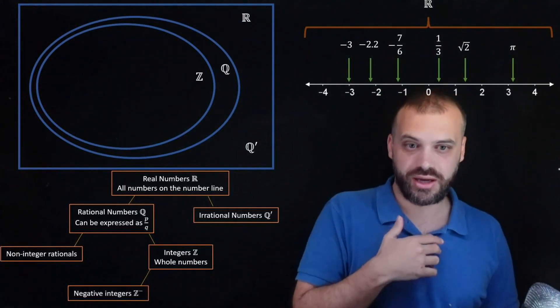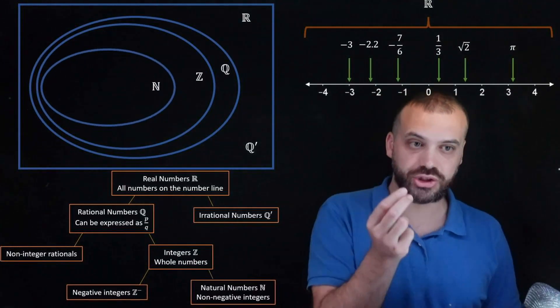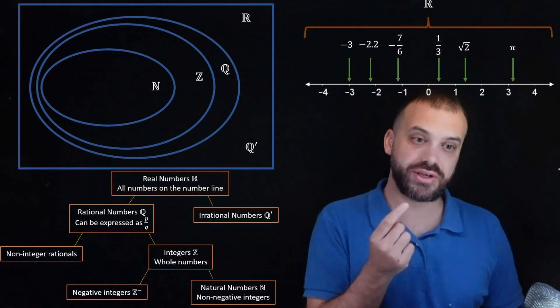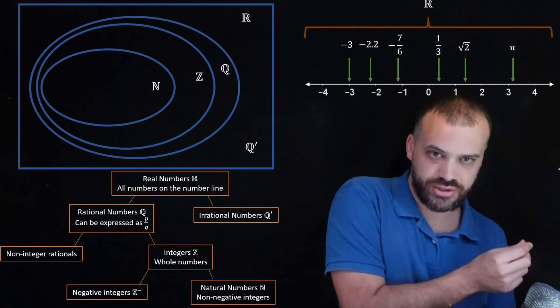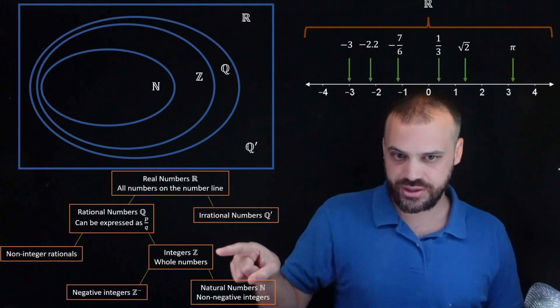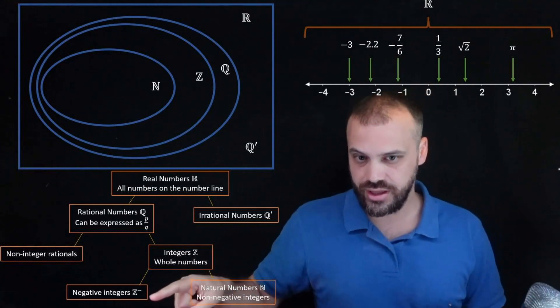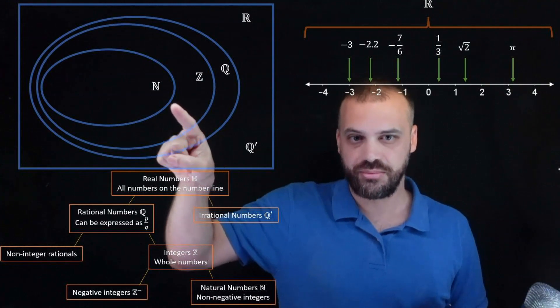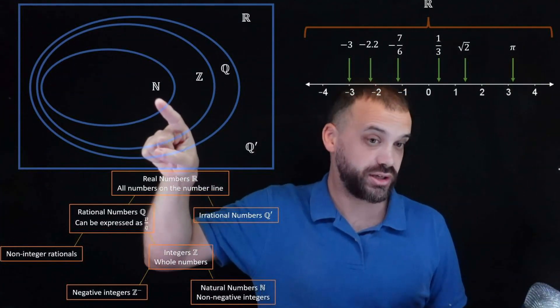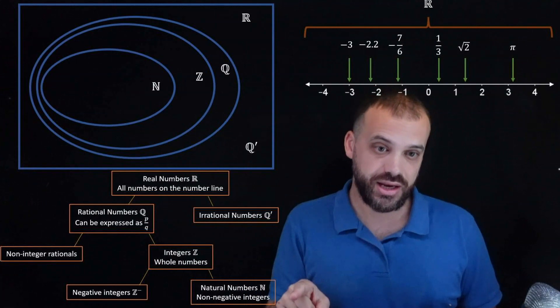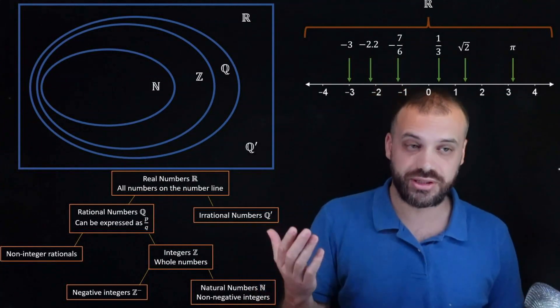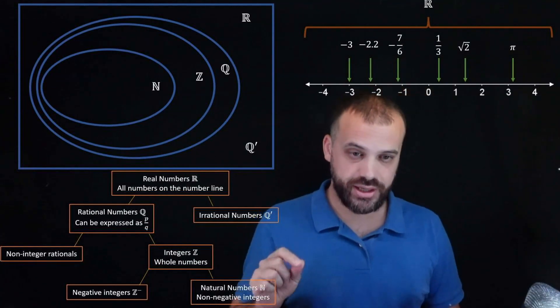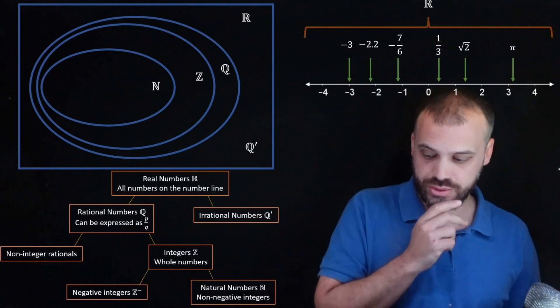And of course we also have the natural numbers, which are the non-negative integers. Okay, so there's integers, there's negative integers, which sit in this little part of the circle here. But then we have this nice double-struck N, which stands for the natural numbers, the counting numbers. Now we are going to break our counting numbers up into two as well.